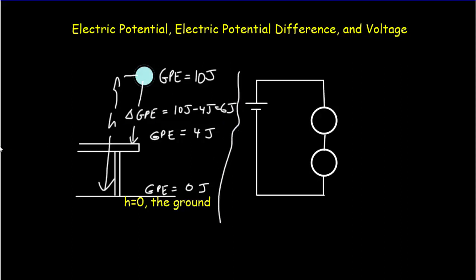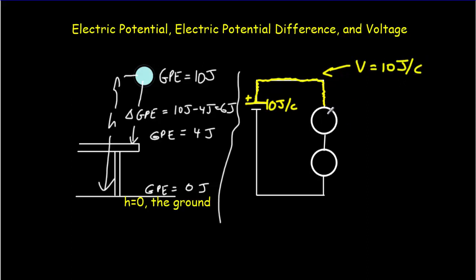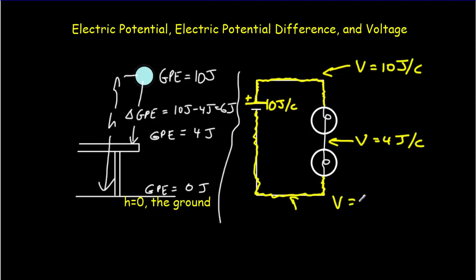We'll do something very similar in electric circuits. Say we have a 10-volt battery — that's 10 joules available per coulomb from the positive side. All the wire connected directly to that positive side would be at the same potential, so we'd say the potential there equals 10 joules per coulomb. We have two light bulbs; between the bulbs the voltage is 4 joules per coulomb. On the negative side of the battery — the grounded side — the potential equals 0 joules per coulomb.